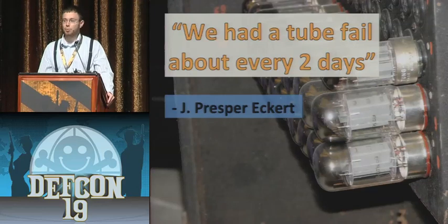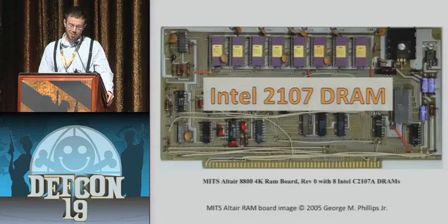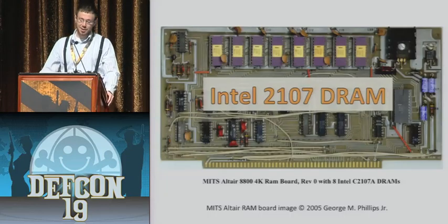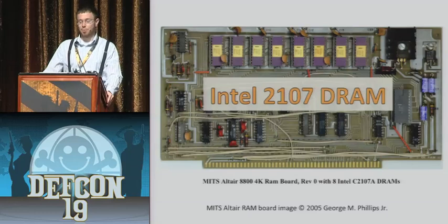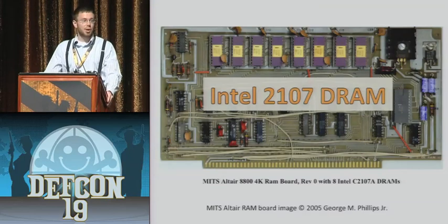We don't use vacuum tubes these days — we moved on to transistors and then integrated circuits, which are much more reliable. This is a RAM board from the MITS Altair 8800, a very famous computer that ushered in the minicomputer revolution. Microsoft's first product was Altair Basic. What we're focused on are those purple chips at the top of this RAM board — those are Intel 2107 series DRAM chips.